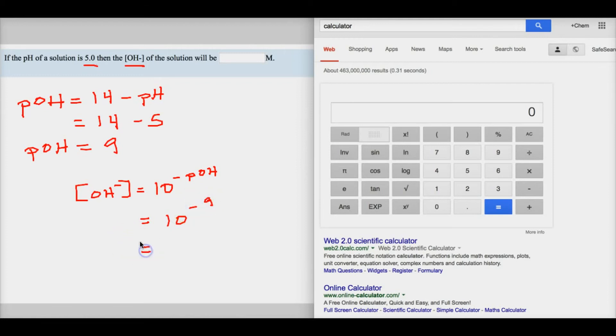And so how do we enter this into the calculator? Well, the way that we're going to do this is we'll hit the inverse button. Once we hit inverse, you'll see times 10 to the x. You'll click that and then you just type in negative 9, and then it equals.